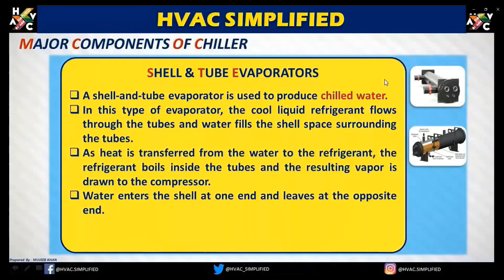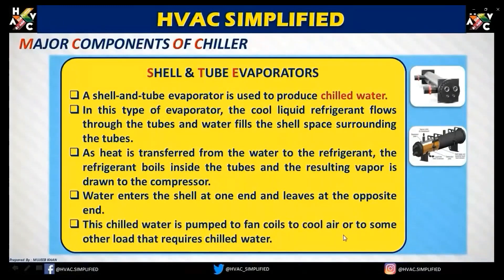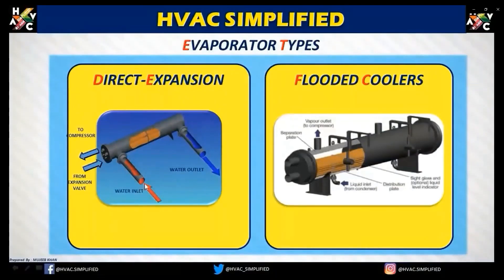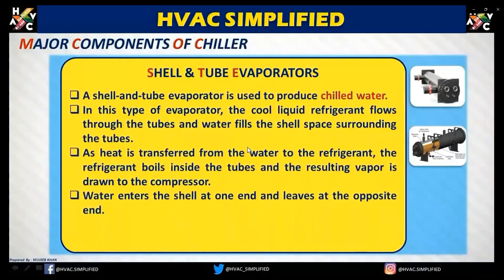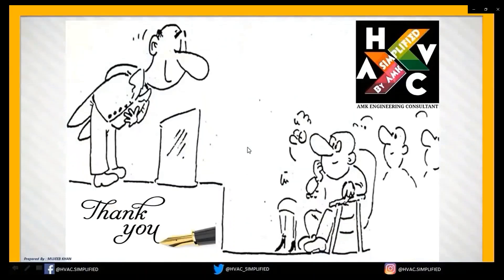Water enters the shell at one end and leaves at the opposite end. This is a chilled water type of evaporator — the chilled water is pumped out to the system. You can see the water inlet and water outlet on the shell and tube evaporator. This shell and tube arrangement acts as the secondary refrigerant circuit. Thank you very much, viewers.